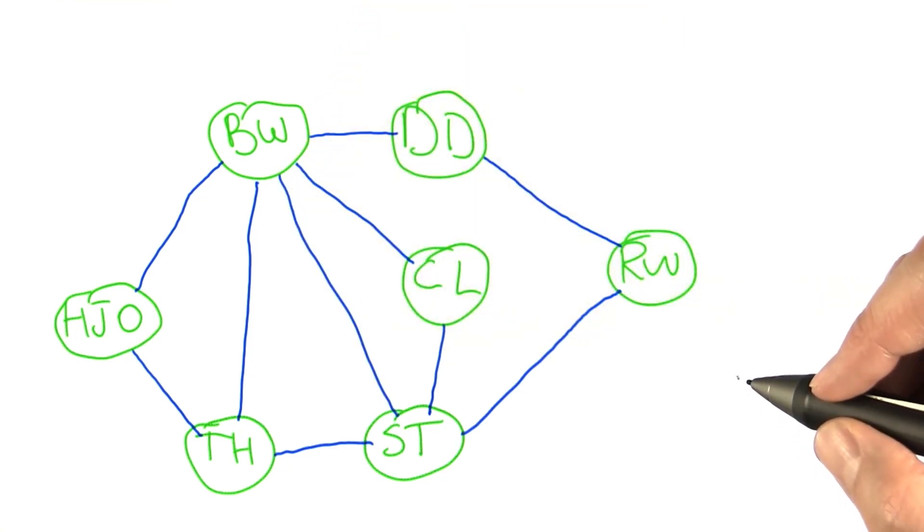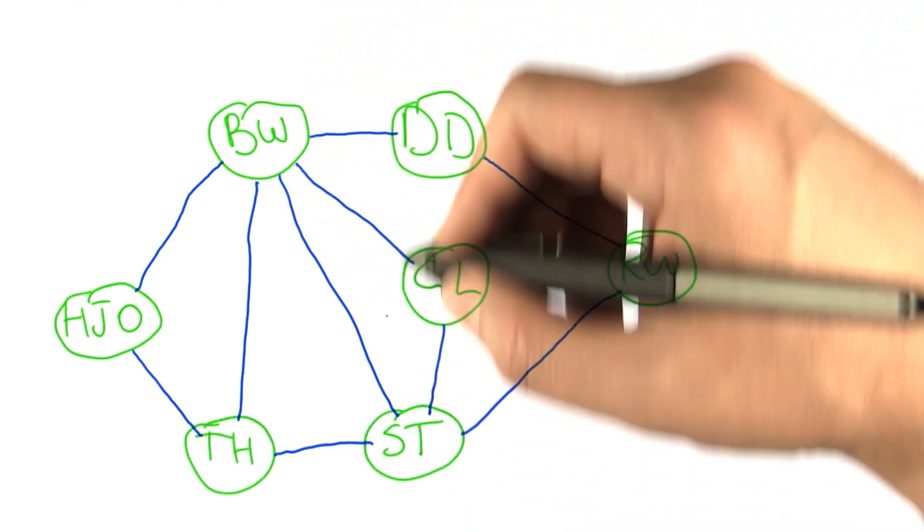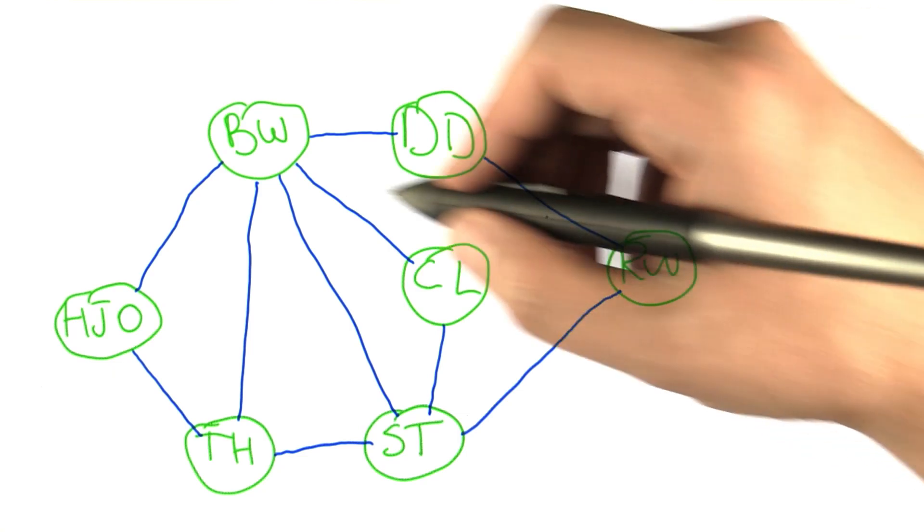Now that we have the diagram, I'm going to start off with one of the actors, let's say Bruce Willis, and I'm going to move around on this structure, visiting all the movies exactly once. And so let's see how that goes.